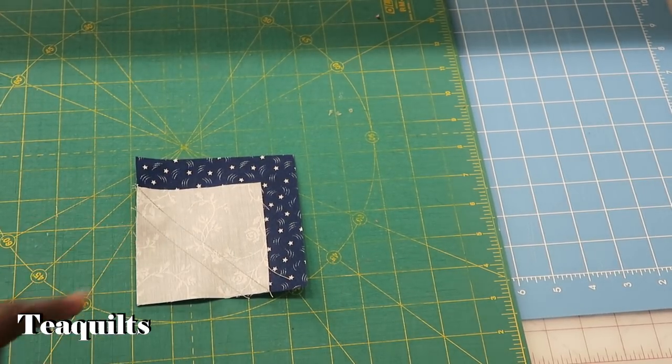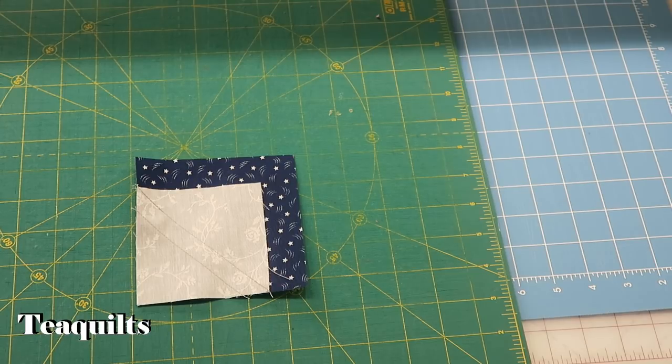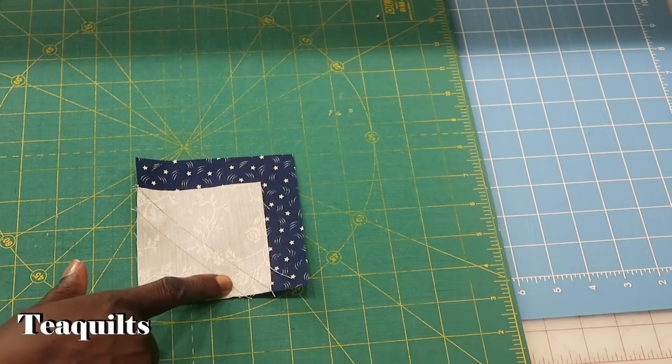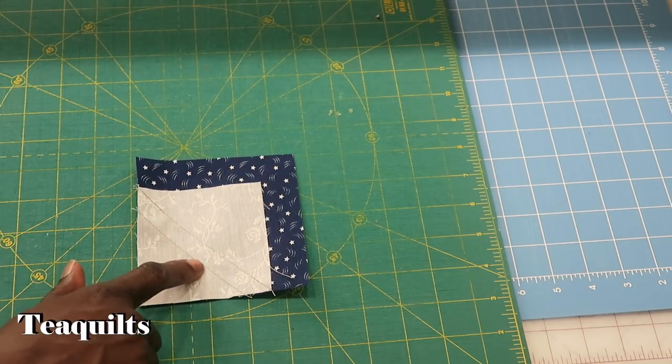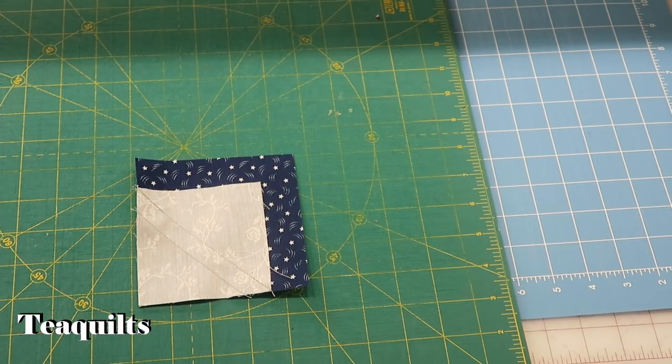When you do that, you'll have a unit that looks like this. It's actually been sewn on both lines, and then the next step is that we're actually going to cut in the middle. We're going to put our quarter inch line on the drawn line and we're going to cut.